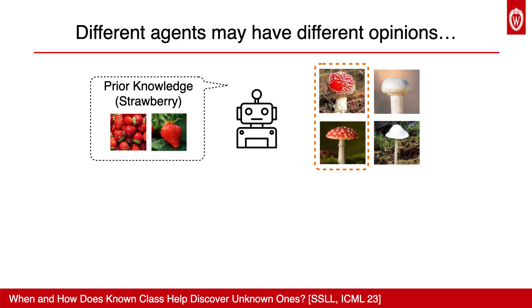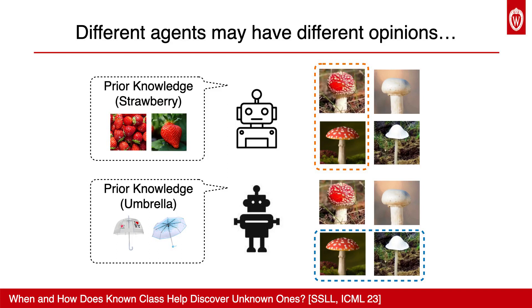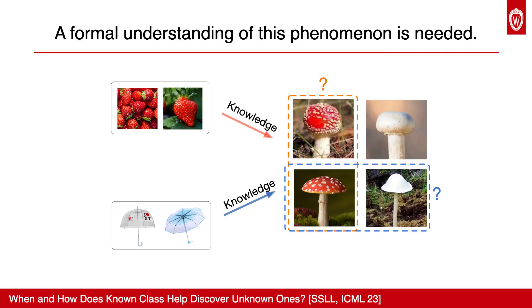For example, we aim to discover mushroom species given prior knowledge from labeled data. In one scenario, the novel class red mushroom can be discovered, provided with the known class strawberry of a shared color feature. Alternatively, the mushroom with umbrella-shaped class can also emerge by grouping the bottom two images together, if umbrella-shaped images are given as a known class. A formalized understanding of this intricate phenomenon is needed, which motivates our research.